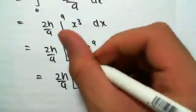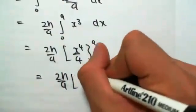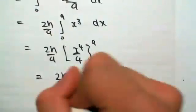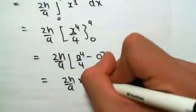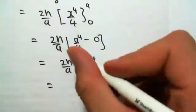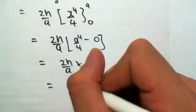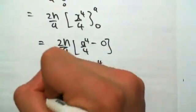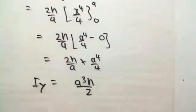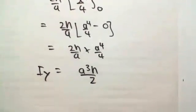Substituting in, we would have a to the power of 4 on 4, minus 0. And this would give us a final answer. 2h on a by a to the power of 4 on 4 would equal a cubed h on 2. So there we have found iy. Okay guys, I'm going to continue the last video and we'll finish this whole problem off. So we'll see you there.